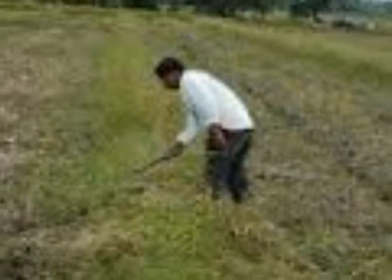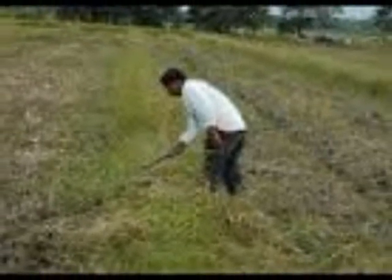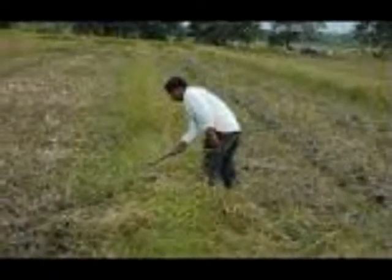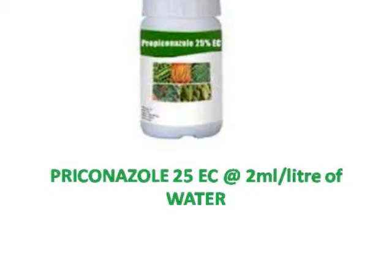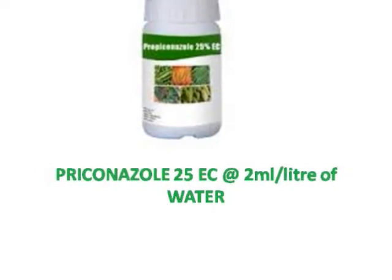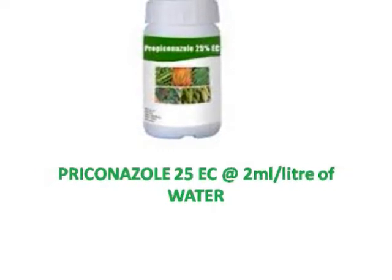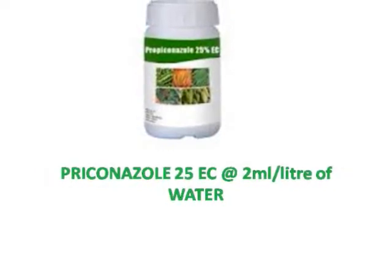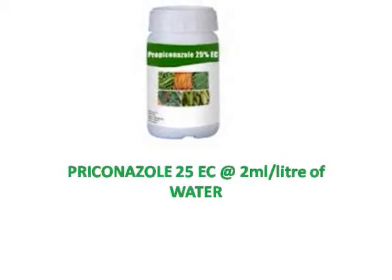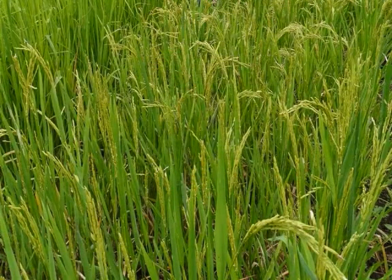Cultural practices like burning and field cleaning reduce the incidence of disease. Spraying of Propiconazole 25 EC at the rate of 2 ml per litre of water during flowering reduces the disease incidence.